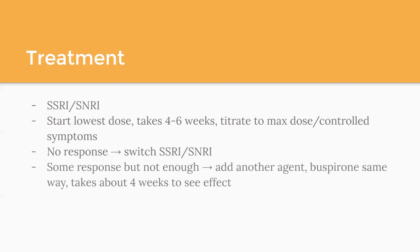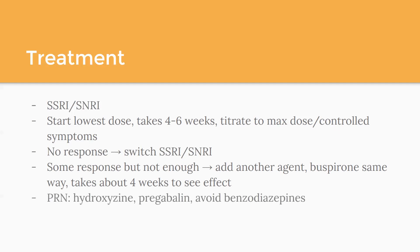If there's some response but not enough and you reach the max dose, you can add a second agent. Buspirone is the next-line option to add in addition to whichever SSRI or SNRI — it also takes about four to six weeks to see full effect. Setting expectations from the beginning is really important; if patients aren't prepared, they can get discouraged. Adding in PRN medications like hydroxyzine or pregabalin is reasonable. My personal take is that if somebody needs benzodiazepines to control their symptoms, they really should seek a psychiatric referral first, to make sure everything else has been maximized given the risks associated with those medications.